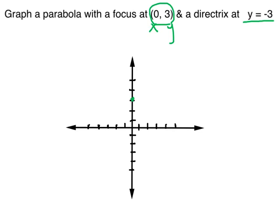The directrix is a line, so I'm going to graph a dotted line at y equals negative 3. I go on the y-axis and find where negative 3 is — negative 1, 2, 3. So that's where my line is going to be. That's my directrix.